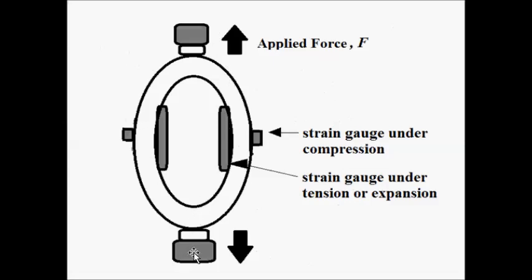When this happens, the two strain gauges connected on the outer side of the ring undergo compression, and the two strain gauges connected on the inner side undergo expansion. These four strain gauges undergo changes in their length and area of cross section because of the compressional and tensile strain induced in them.